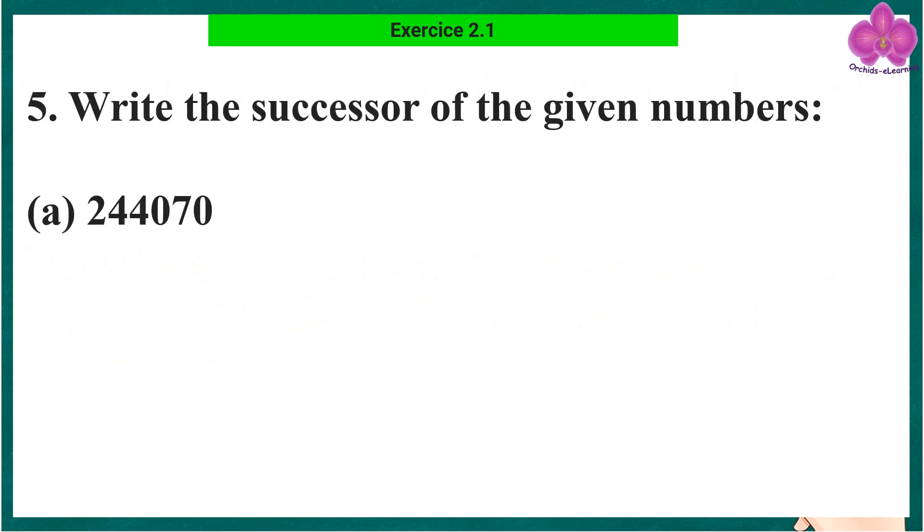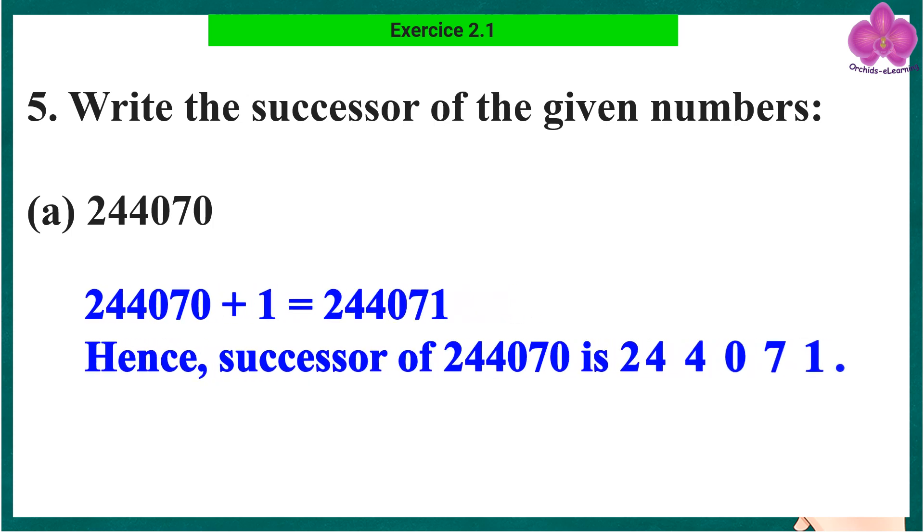Question 5: Write the successor of the given numbers. Part a: 2 lakh 44,070. 2 lakh 44,070 plus 1 equals 2 lakh 44,071. Hence, successor of 2 lakh 44,070 is 2 lakh 44,071.